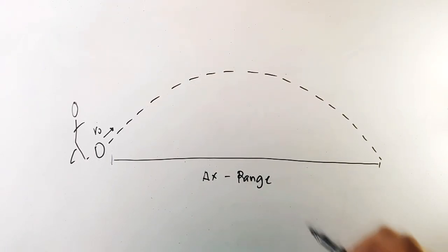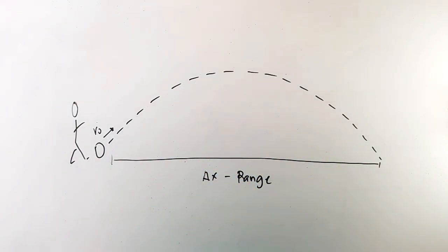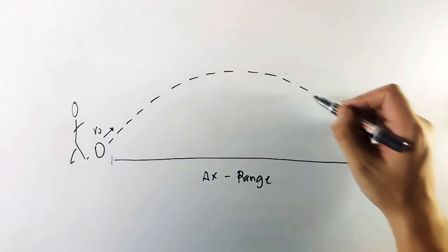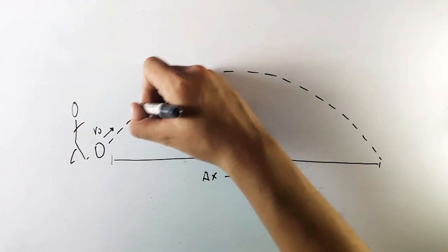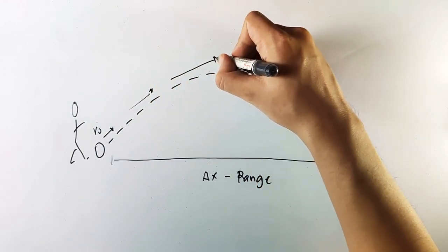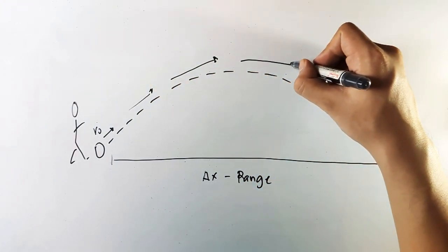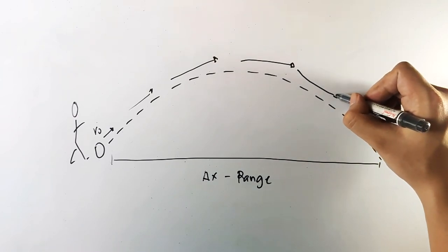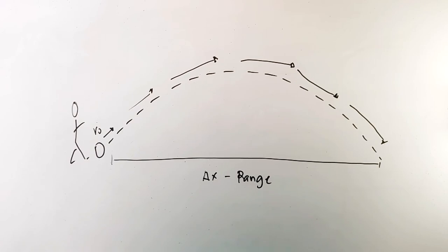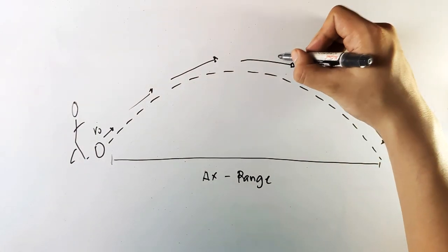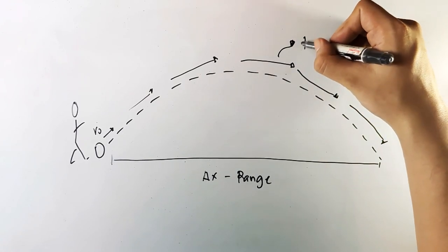Next we have this line. This is what we call the trajectory. This is the path that the ball follows, or actually any object that travels in a projectile motion. This is the trajectory.